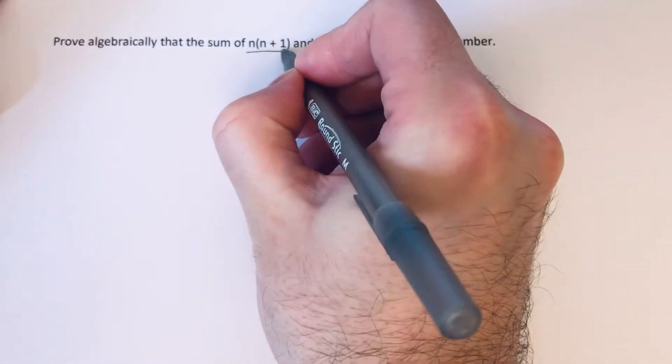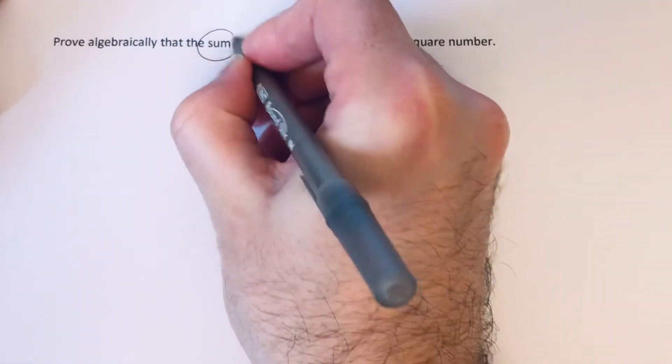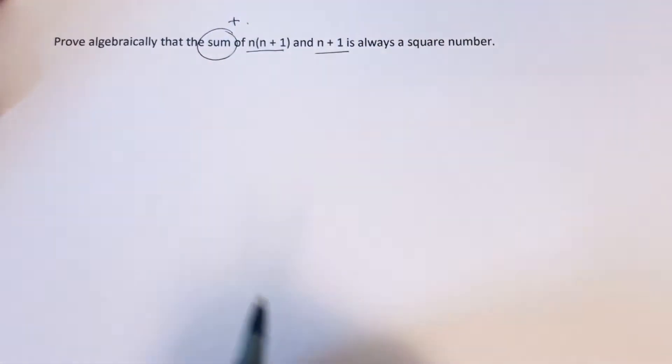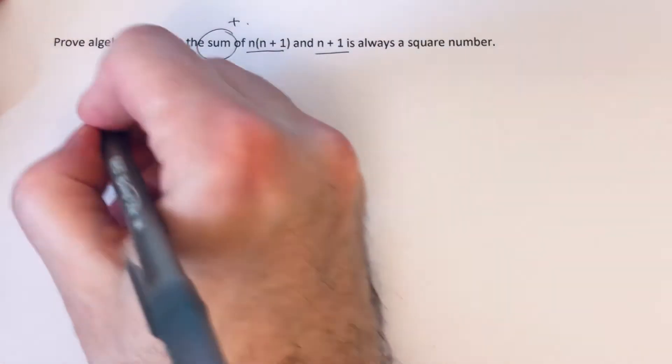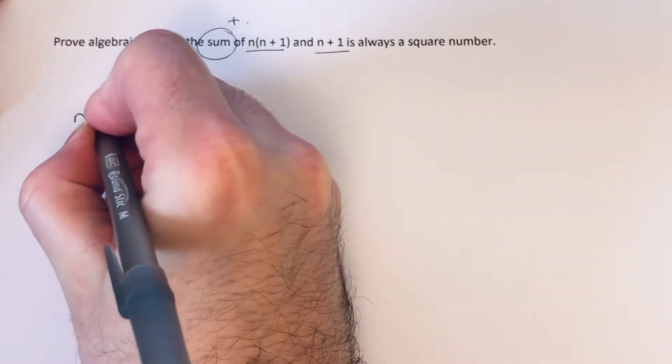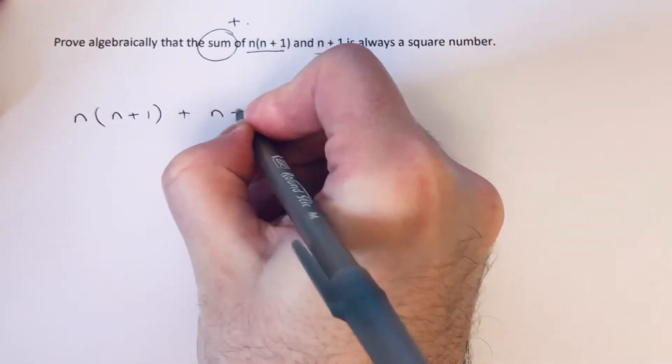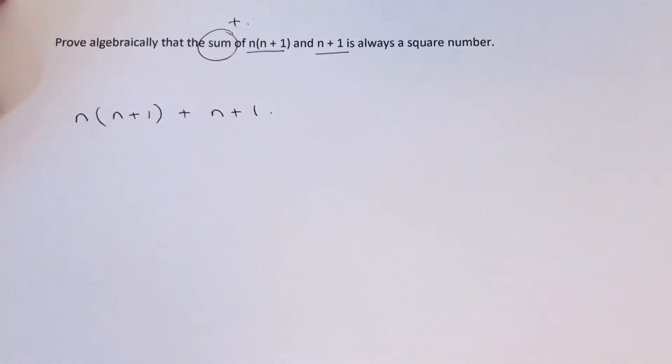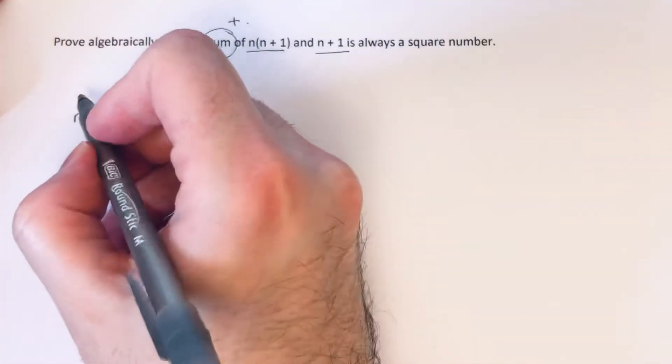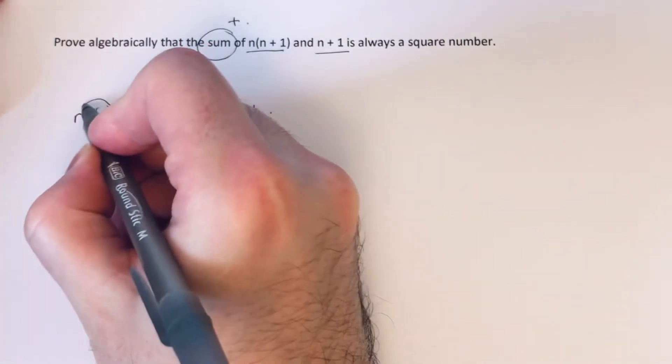The first thing we need to do is add these two terms together, because sum means we need to add. So we've got n(n+1) plus n+1. First thing we need to do now is multiply out our first bracket.